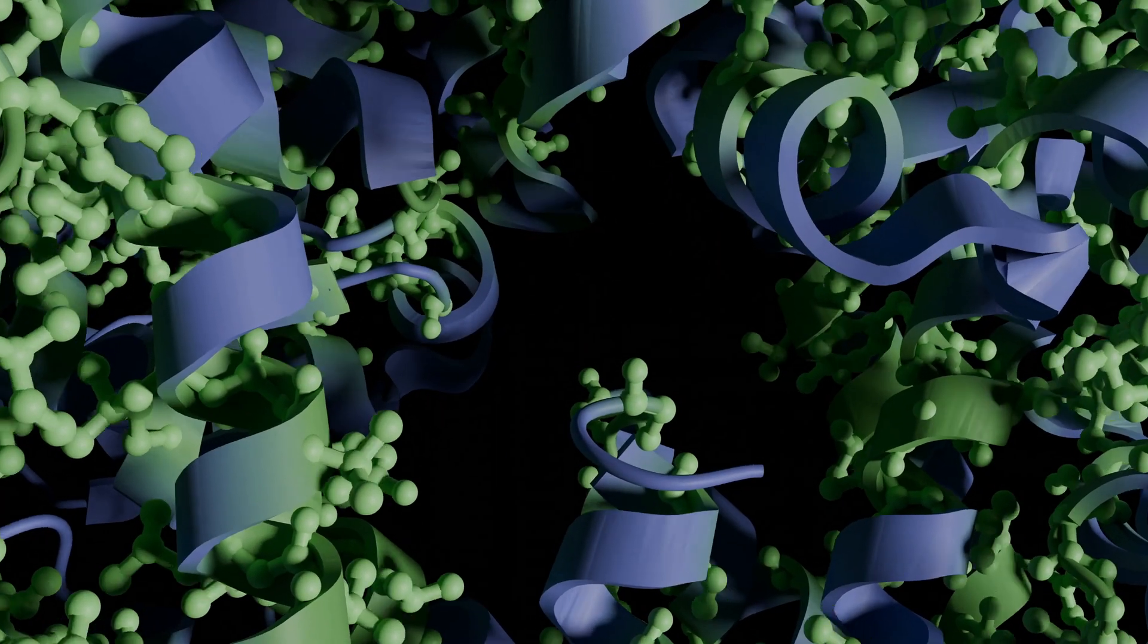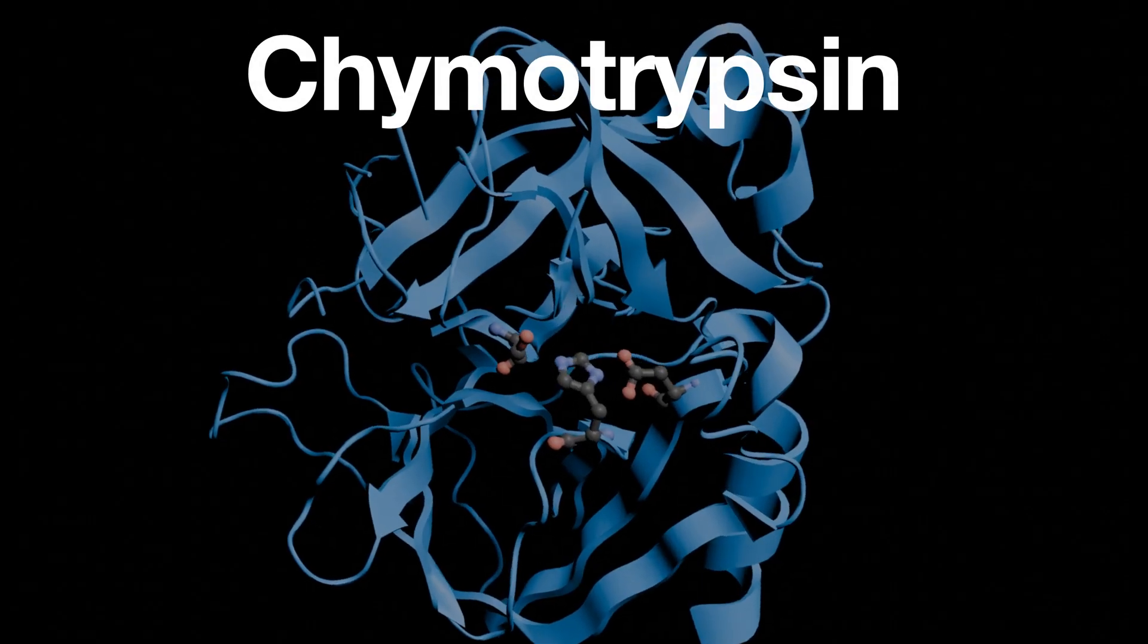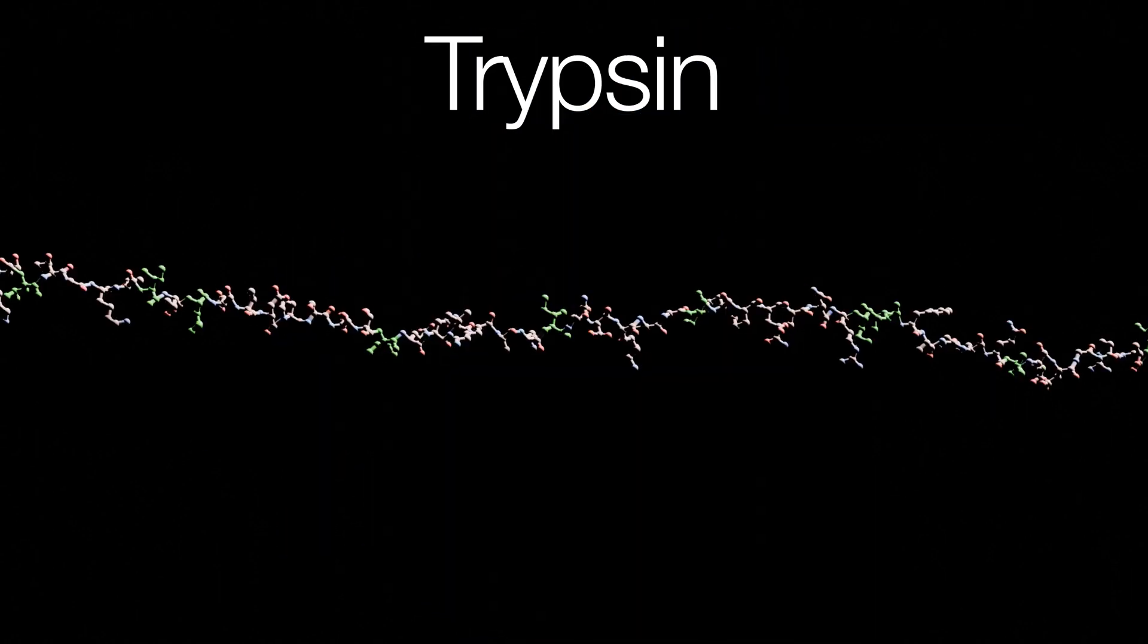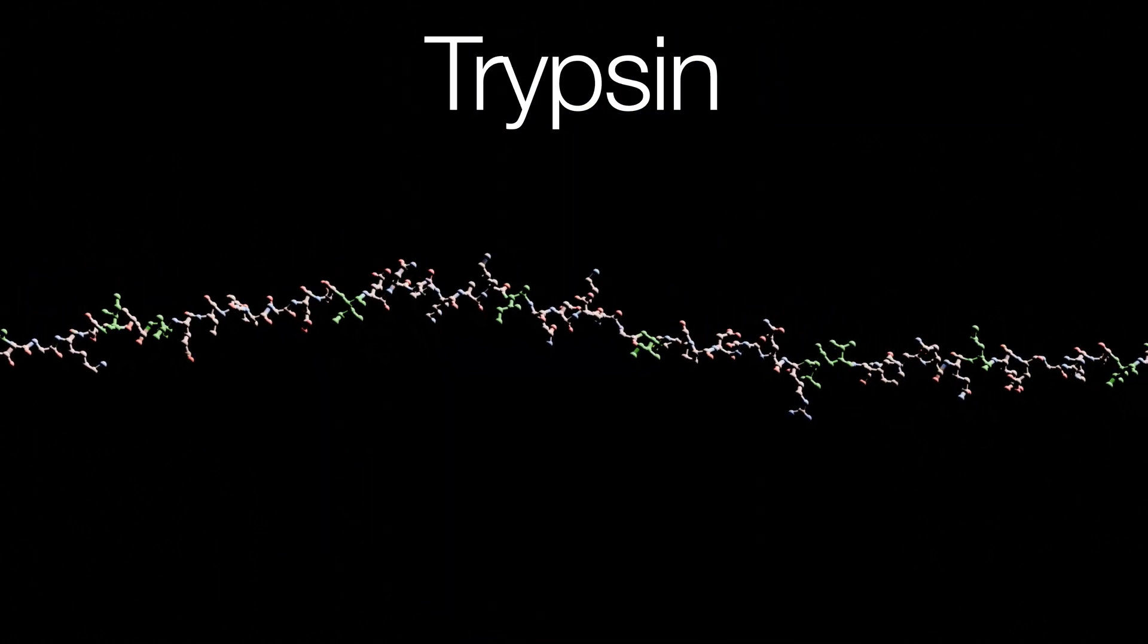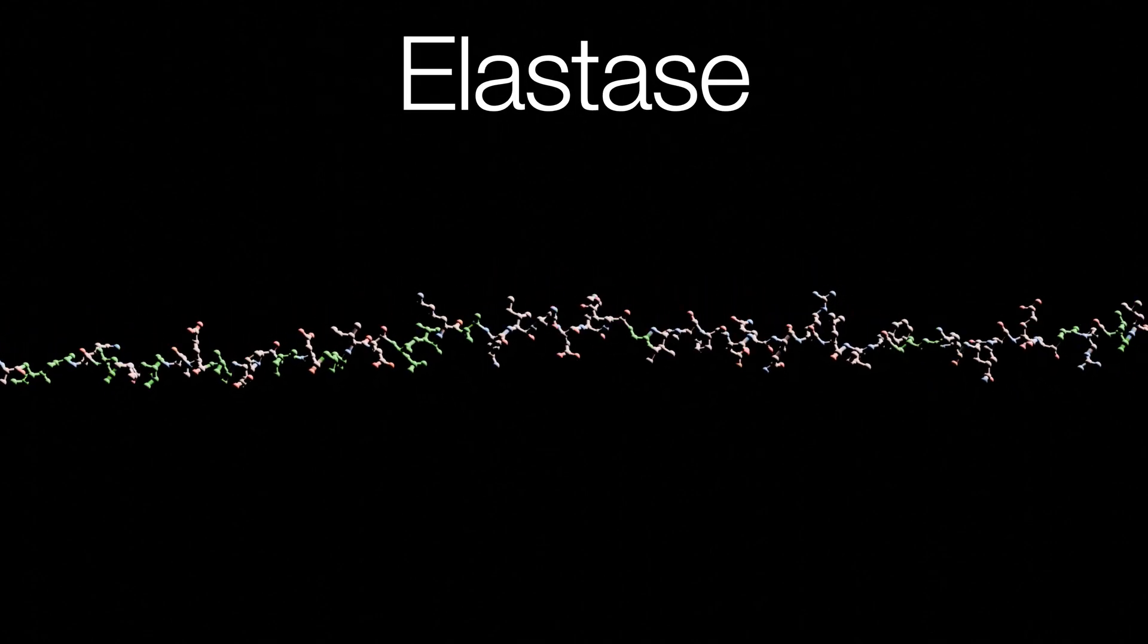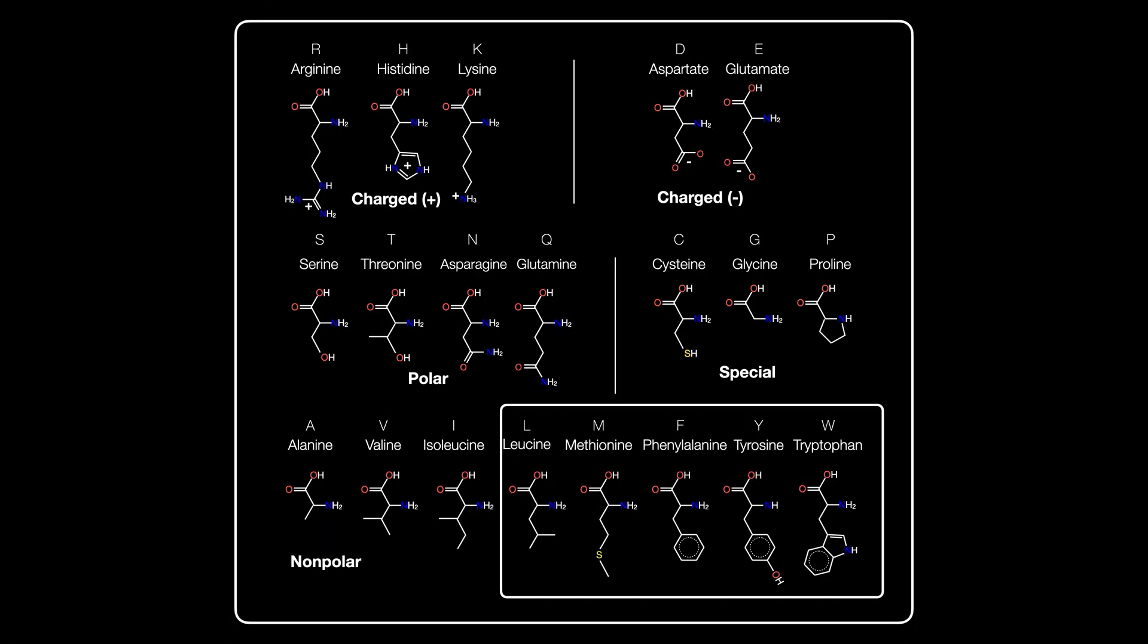So how does structure actually impact function? Allow me to demonstrate using chymotrypsin and its cousins and the HIV proteases. If you feed these strings of amino acids to these proteases, what you'll find is that they are very picky about where they cut. Chymotrypsin only cuts next to big amino acids, trypsin only cuts positively charged amino acids, and elastase only cuts small amino acids.